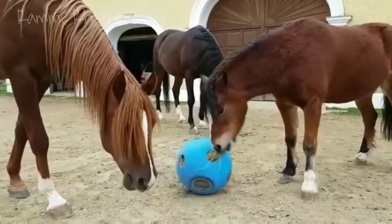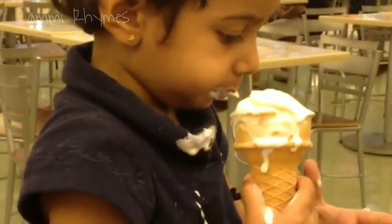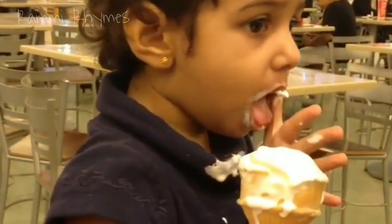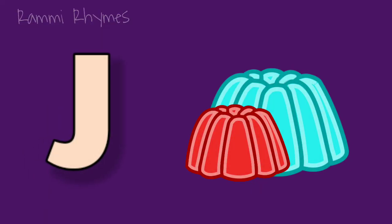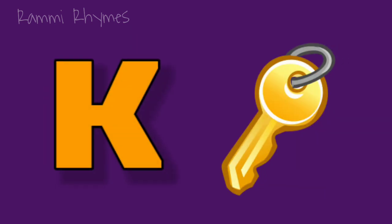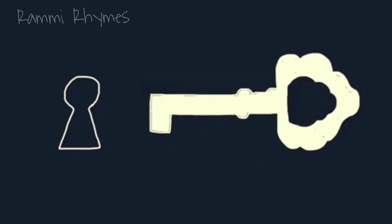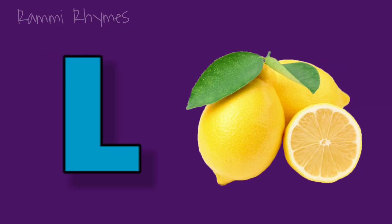I is for ice cream. J is for jelly. K is for keys. L is for lemon.